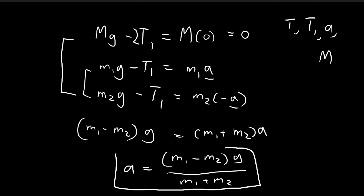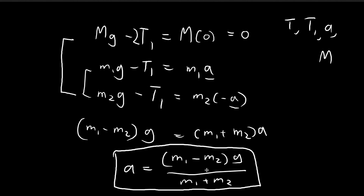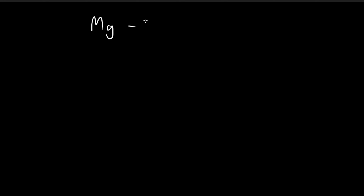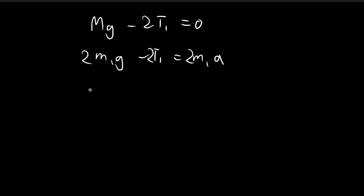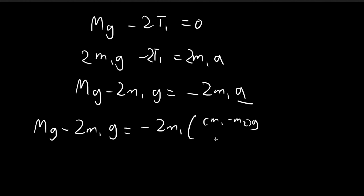This result makes perfect sense — if m1 is heavier than m2, then a is positive, meaning m1 goes down, which is exactly what we would expect. That's a consistency check for this result. Using this result, we can derive what capital M should be. From our equations: Mg minus 2T1 equals zero, and m1g minus T1 equals m1a. We get rid of T1 by multiplying both sides by 2 and subtracting the two equations, giving a right-hand side of negative m1a. Then we substitute a equals (m1 minus m2)g divided by (m1 plus m2).